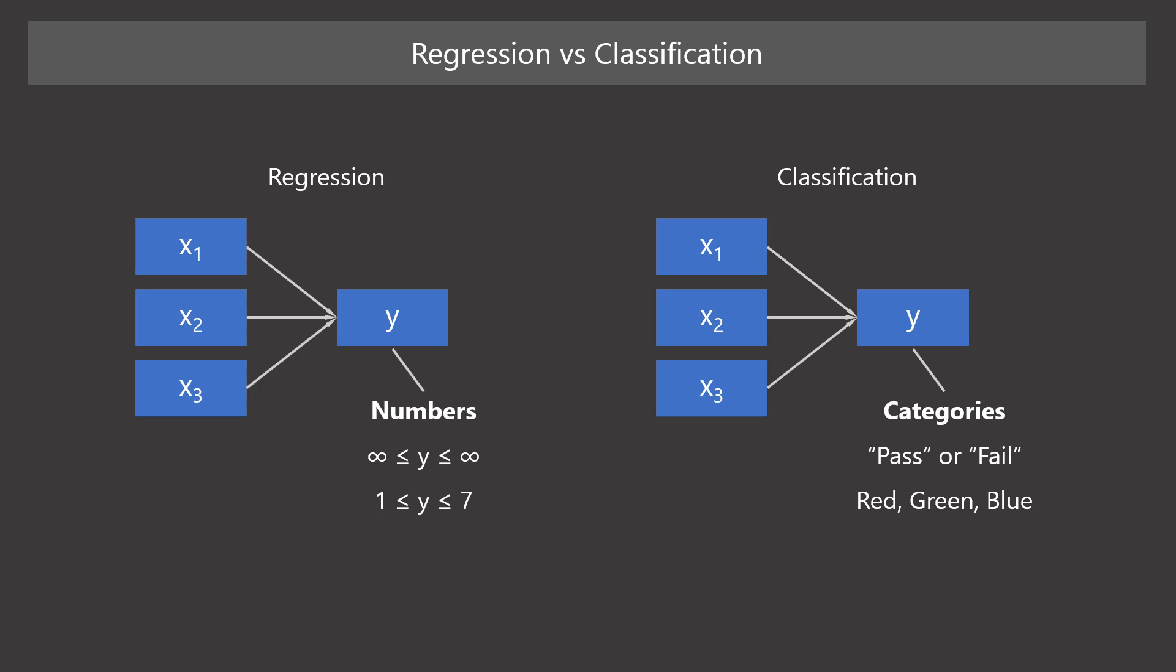In usual cases, both regression and classification use many predictor variables to predict the outcome. The notable difference is the type of outcome variable. In regression, the outcome is a numerical variable. It can take any values or a certain range of values.